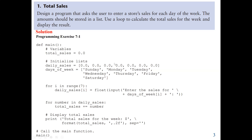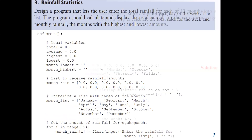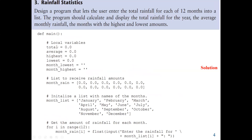Now let's see our second example — Question 3 from our textbook. Here they say we should design a program that lets the user enter the total rainfall for each of the 12 months into a list. The program should calculate and display the total rainfall for the year, the average monthly rainfall, and the month with the highest and lowest rainfall. They didn't tell us to use a for loop to find the total or average, so we can use the built-in functions that come with the list data structure.